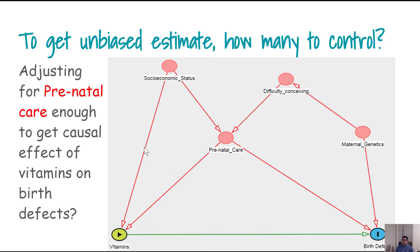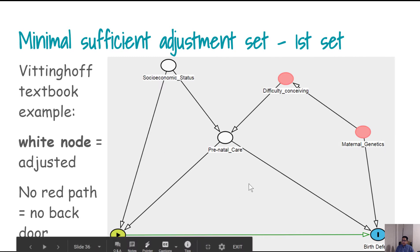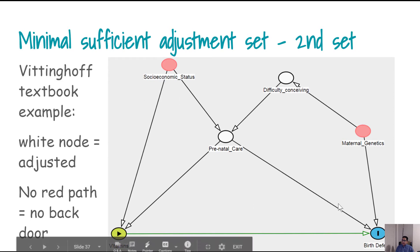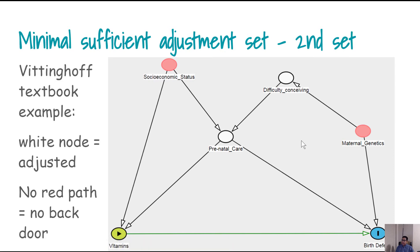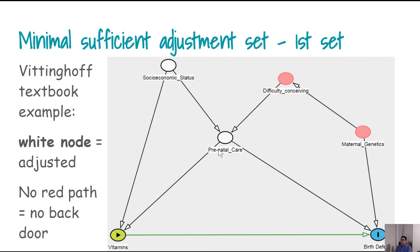You will see that if you adjust for these two variables, you no longer have any red paths. It is also possible that adjusting for only these two variables eliminates all red paths — leaving green paths and dark black paths, but no red paths. There is also a third set where adjusting for a different pair of variables gives you the same result.